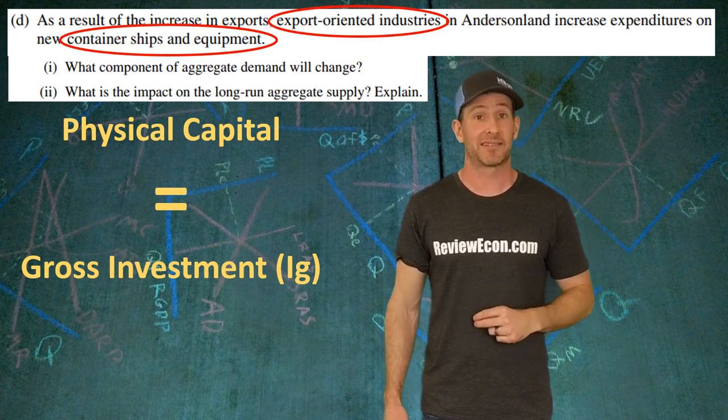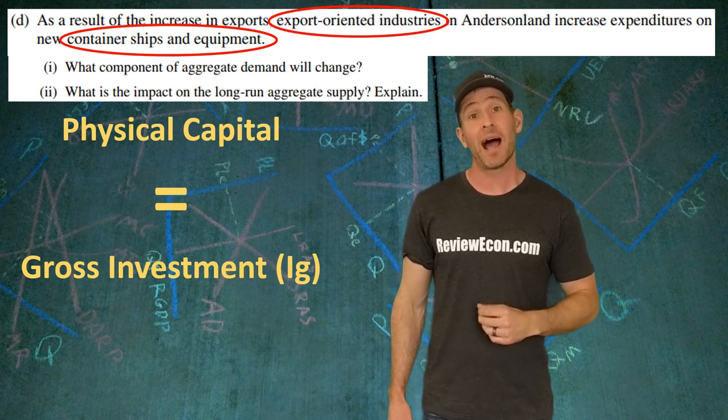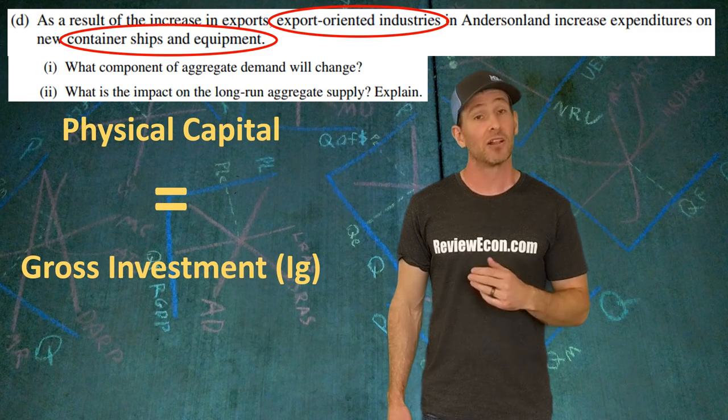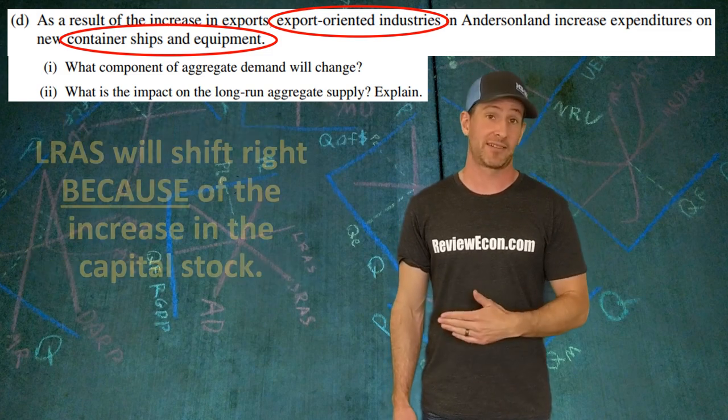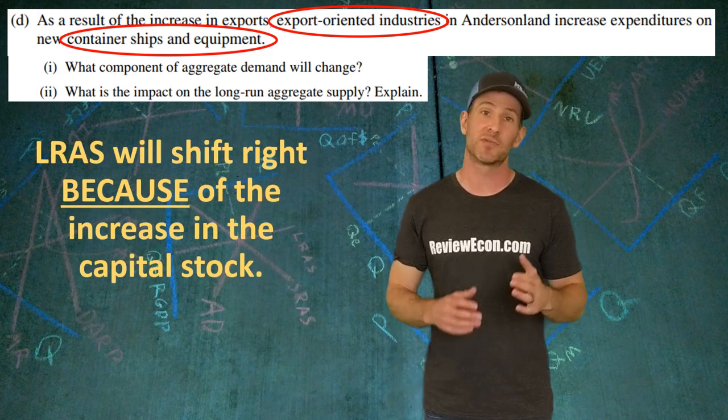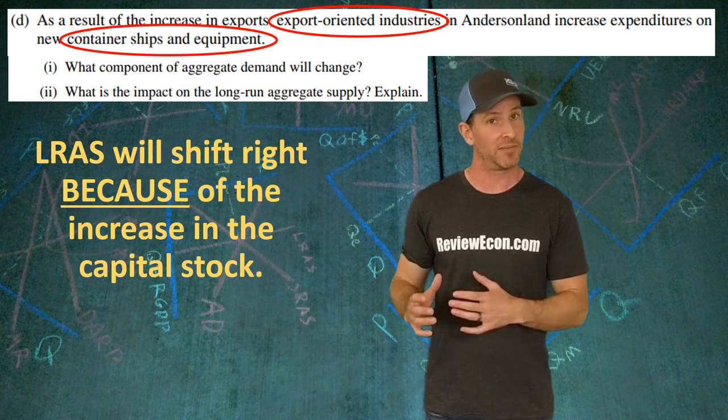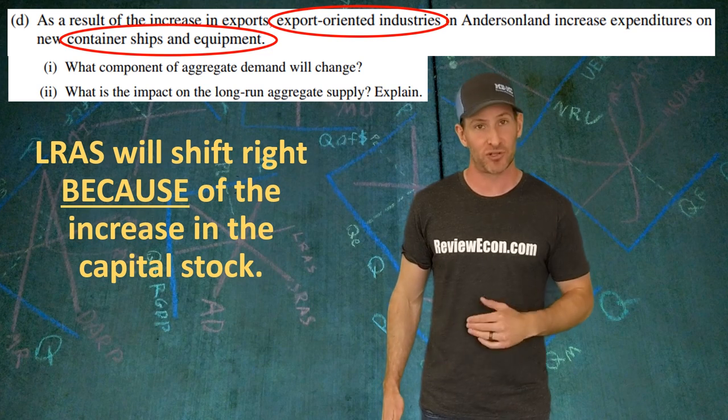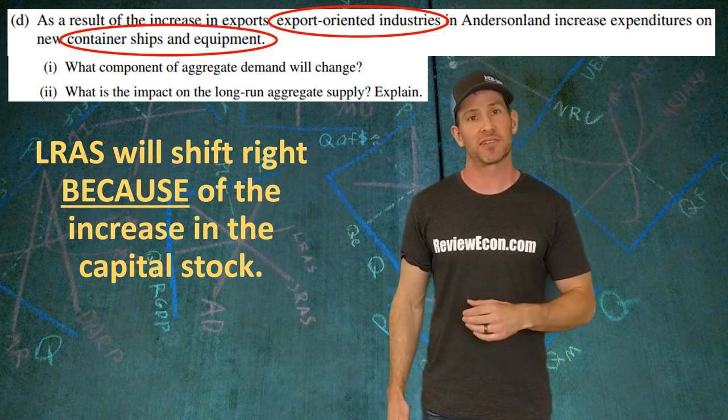Section two asks us to identify what will happen to the long run aggregate supply curve and to explain. Long run aggregate supply is going to shift to the right. And the reason why is because we have new purchases of capital equipment. That new purchase of capital equipment is going to increase the potential GDP for this economy.